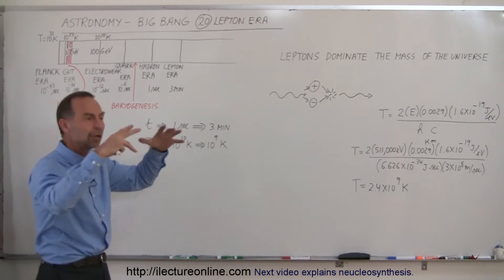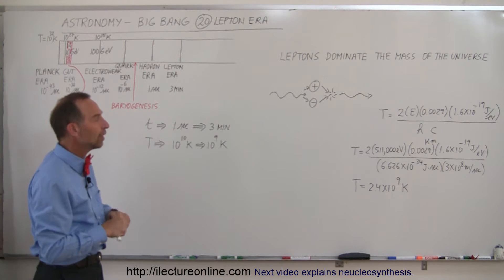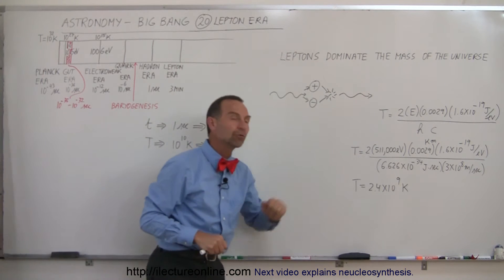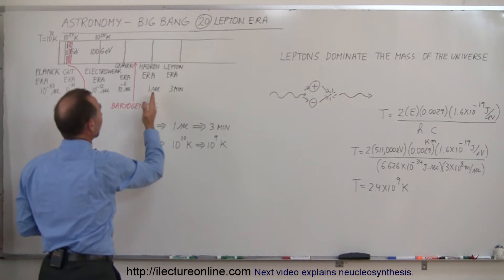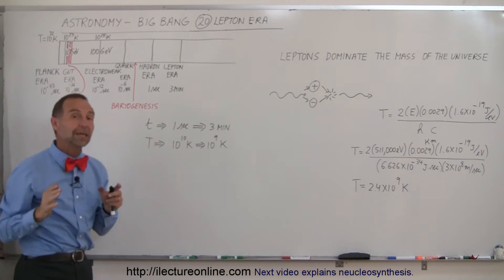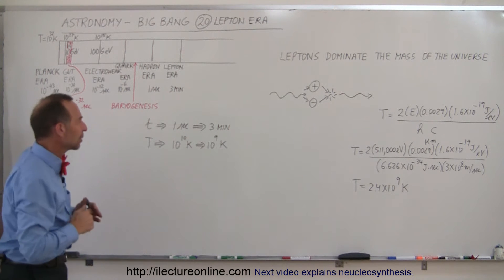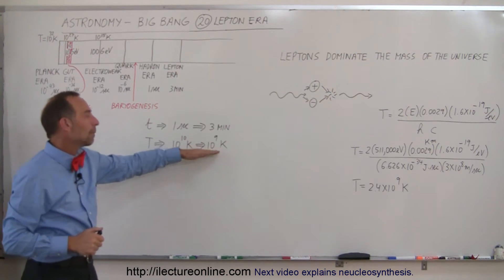So the radiation that permeated the universe, which we now can see the leftover cosmic background radiation of, had to be at a temperature of at least 2.4 billion Kelvin. And sure enough, during the lepton era, which started one second after the universe began to about three minutes after the universe began, so now we're talking about longer time periods, the temperature dropped from about 10 billion to about a billion.